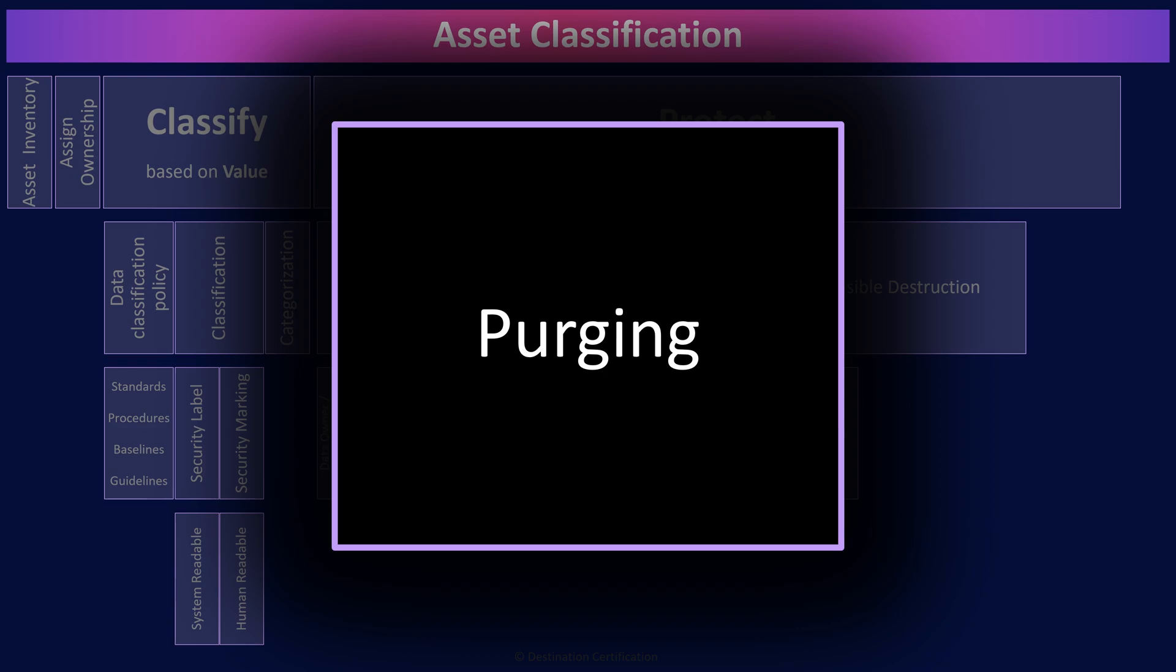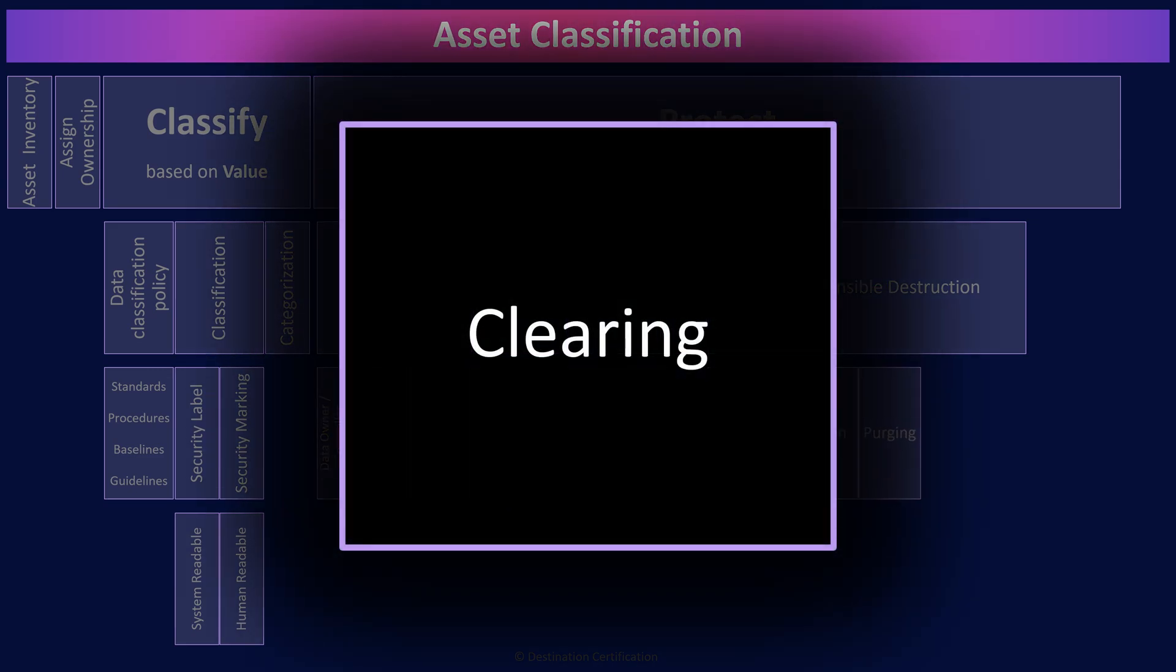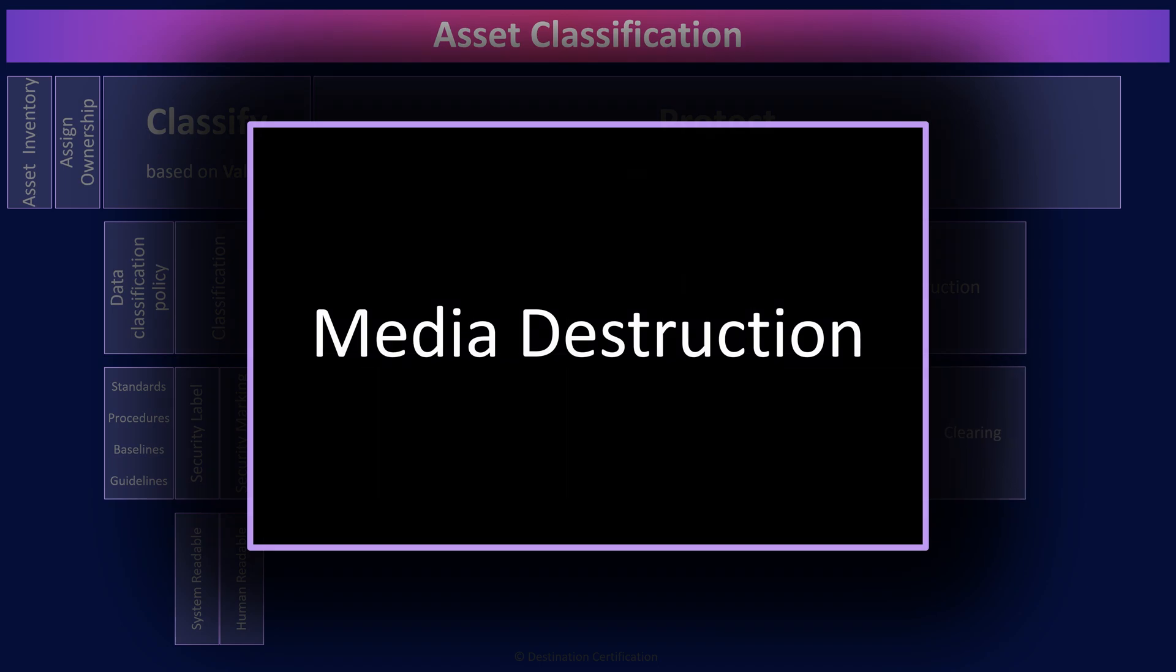And finally, the worst category is known as clearing, which means using logical techniques to sanitize the data, thus making it so that the data may not be reconstructed. That's not super reassuring, right? May not be reconstructed. OK, now let's look at the techniques starting from best to worst.